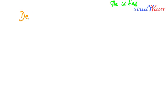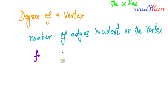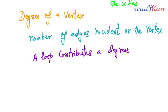Next we are looking at the degree of a vertex. The degree of a vertex is simply the number of edges incident on the vertex. We just have to remember one thing: a loop contributes a degree of 2 to its terminal vertex, while all other types of edges contribute a degree of 1.